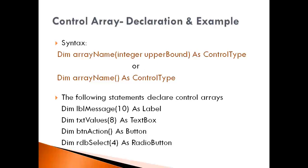You give the keyword Dim, then the array name. Then in parenthesis you give the upper bound as an integer. Upper bound specifies how many elements you want in your control array. Whatever value you give, you will have one additional element in the array. That means if you give 4, then from 0 to 4, five elements will be created for this array.